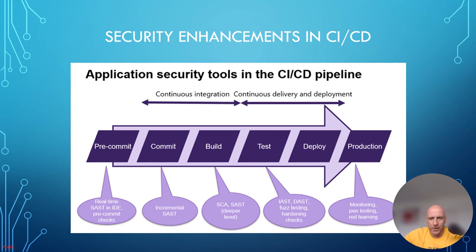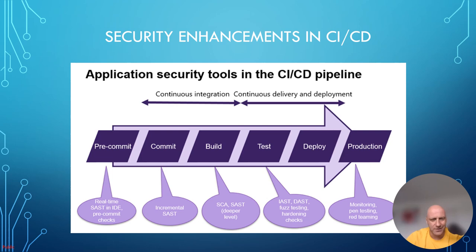Then we go to deployment and production, where we do monitoring, penetration testing, and red teaming to create hypothetical scenarios of what could go wrong. In production the code keeps changing with incremental deployments, so monitoring is critical. We create red-teaming scenarios to test our hypotheses and make sure everything aligns with expectations. That's the rundown of the DevSecOps framework. Please like and subscribe to get alerted when new videos are up, and thank you for your time.